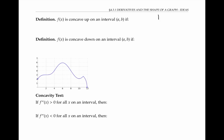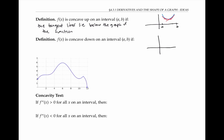We say that a function is concave up on an interval from A to B if informally it looks like a bowl that could hold water on that interval. More formally, the function is concave up on that interval if all the tangent lines for the function on that interval lie below the graph of the function. The function is concave down on the interval from A to B if informally it looks like an upside down bowl that would spill water, or more formally, if all the tangent lines lie above the graph of the function on that interval.